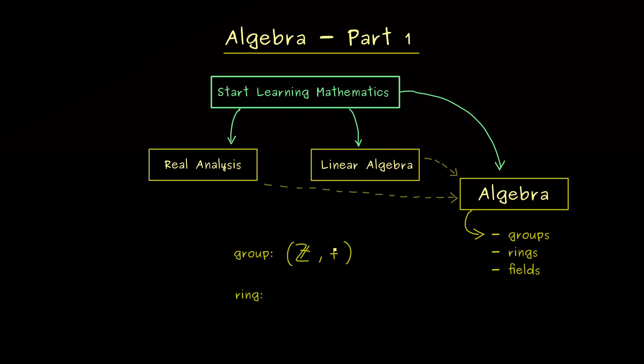Now on the other hand, the integers are also a good example for a so-called ring. There the integers need more structure. Namely, besides the addition we also need the multiplication. Hence, a ring is just a set together with two operations, where for the one operation we don't need all the inverses in the set.